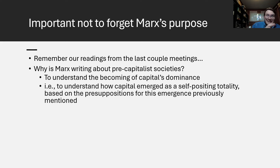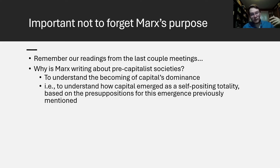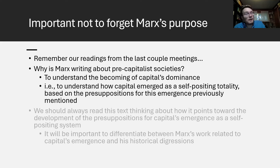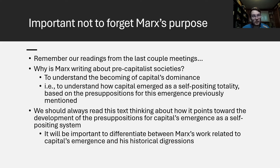We should understand the whole thread of this text not as some sort of history of how things progressed through time, but as the becoming of capital's dominance — how did capitalism emerge from whatever preceded it? What are the conditions that led to the emergence of capitalism? In other words, how did capitalism emerge as a self-positing totality based on those four presuppositions? We've always got to read this text thinking about how it points toward the development of the presuppositions for capitalism's emergence.